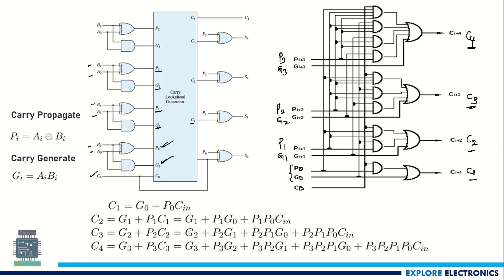Is there any dependency on carry in generating the P and G signals? There is no dependency on carry. The propagate signal is calculated by XOR of the inputs A and B. Similarly, AND of A and B gives the generate signal. Correspondingly, C1, C2, C3 and C4 are generated. To get the sum, we need an XOR gate of A, B as well as the carry. After generating these carry signals, we can use them to generate the sums. You can also see the expressions for generating C1, C2, C3 and C4, and by using these expressions we can easily implement them in gates.